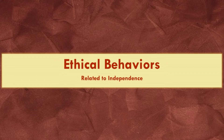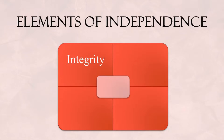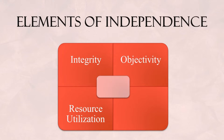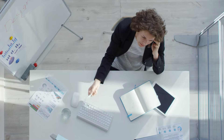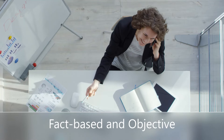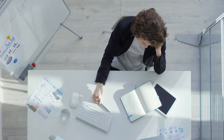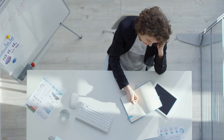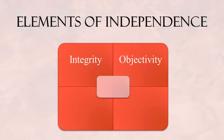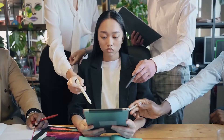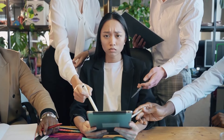Let's briefly discuss ethical behaviors. Internal auditors are expected to perform audit procedures by upholding ethical principles, such as integrity, objectivity, resource utilization, and professional behavior. Internal auditors display integrity by performing their work with an attitude that is fact-based and objective — they perform their work with the same standards regardless of who the control owner is or which management group they are working with. The next ethical principle is objectivity: internal audit procedures should be performed without influence from others and without special treatment or bias.